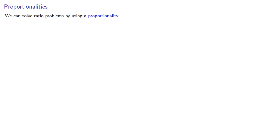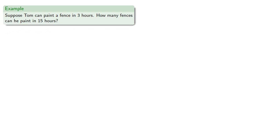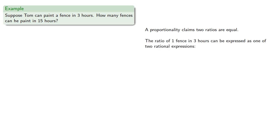We can solve ratio problems using a proportionality — the equality of two ratios where we express the ratios as rational expressions. For example, suppose Tom can paint a fence in three hours. How many fences can he paint in 15 hours? Proportionality claims two ratios are equal. This ratio of one fence in three hours can be expressed as one fence every three hours or three hours per fence.